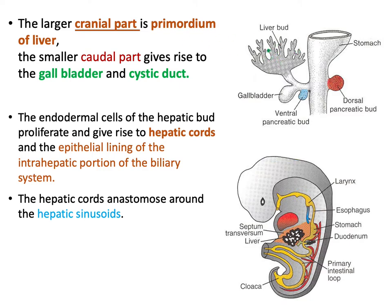The cranial part is the largest and forms the primordium of the liver. The smaller caudal part gives rise to the gallbladder and cystic duct. Within the liver bud, the endoderm cells of the hepatic bud proliferate and give rise to hepatic cords.